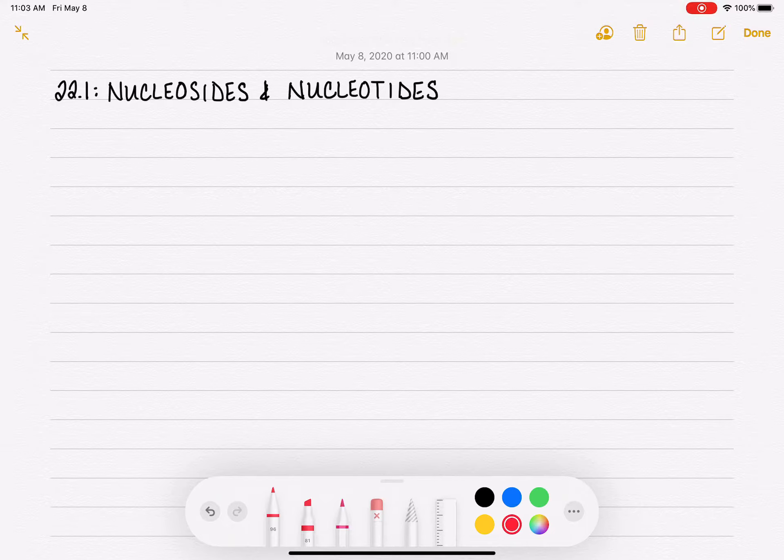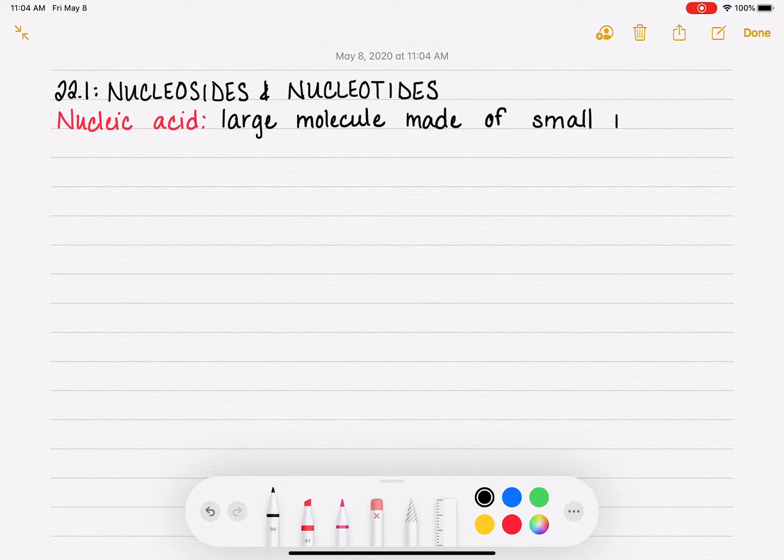So first of all, we're going to define nucleic acid. This chapter 22 is focusing on nucleic acids. And we're going to define a nucleic acid as a large molecule that is made up of smaller molecules.